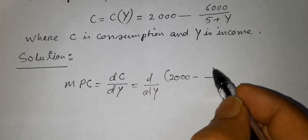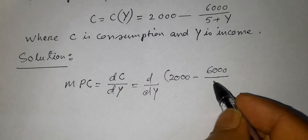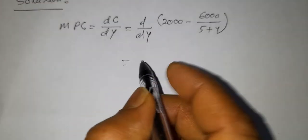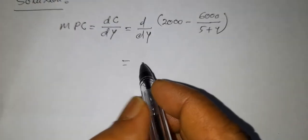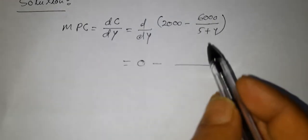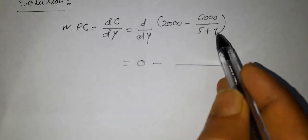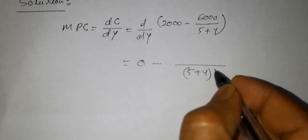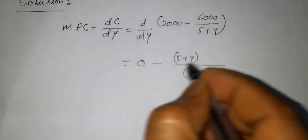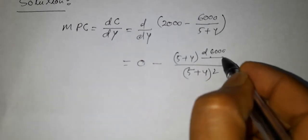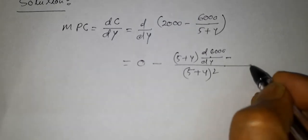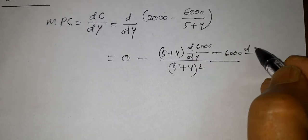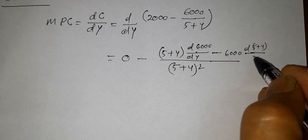So we differentiate: 2000 minus 6000 divided by (5 plus y). The derivative value of 2000 is constant so it will be 0, minus the derivative of 6000 divided by (5 plus y). Here we use the quotient rule: denominator (5 plus y) squared times the derivative of 6000 with respect to y, minus 6000 times the derivative of the denominator (5 plus y) with respect to y.